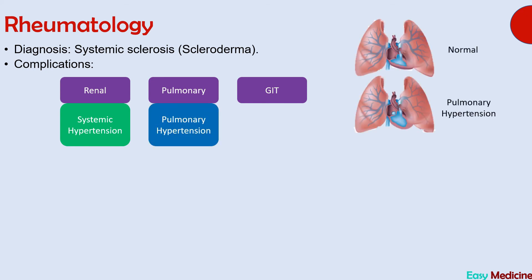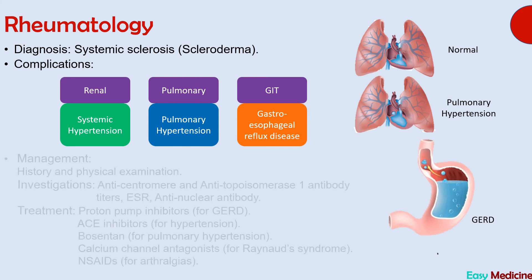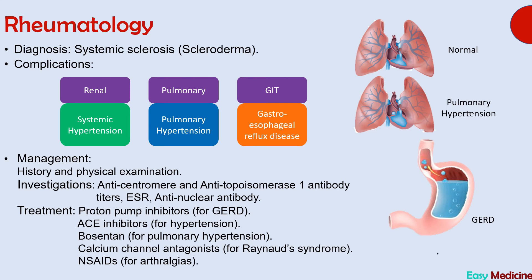Management of systemic sclerosis begins with history and physical examination. Investigations include anti-centromere and anti-topoisomerase 1 antibody titers, ESR, and anti-nuclear antibody assay. Treatment targets complications: proton pump inhibitors for GERD, ACE inhibitors for hypertension, bosentan for pulmonary hypertension, calcium channel antagonists for Raynaud's disease, and NSAIDs for arthralgias.